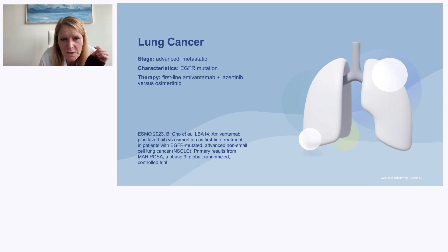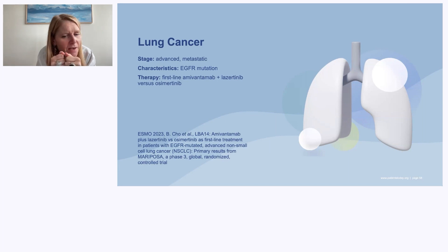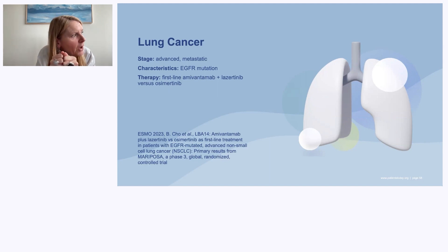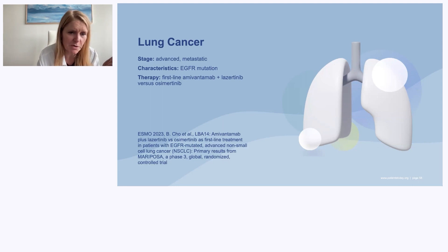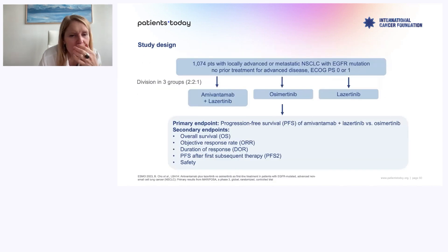To do better than osimertinib, they use the sister drug lazertinib — let's consider lazertinib is equivalent to osimertinib; they just replace each other. And they add amivantamab, an interesting drug. As you can read in the name, it's a monoclonal antibody targeting MET on one head and EGFR on the other. The idea is to prevent a mechanism of oncogenic signaling — MET signaling — which allows cancer cells to escape from the drug you give. So you have this bispecific antibody given with lazertinib versus osimertinib.